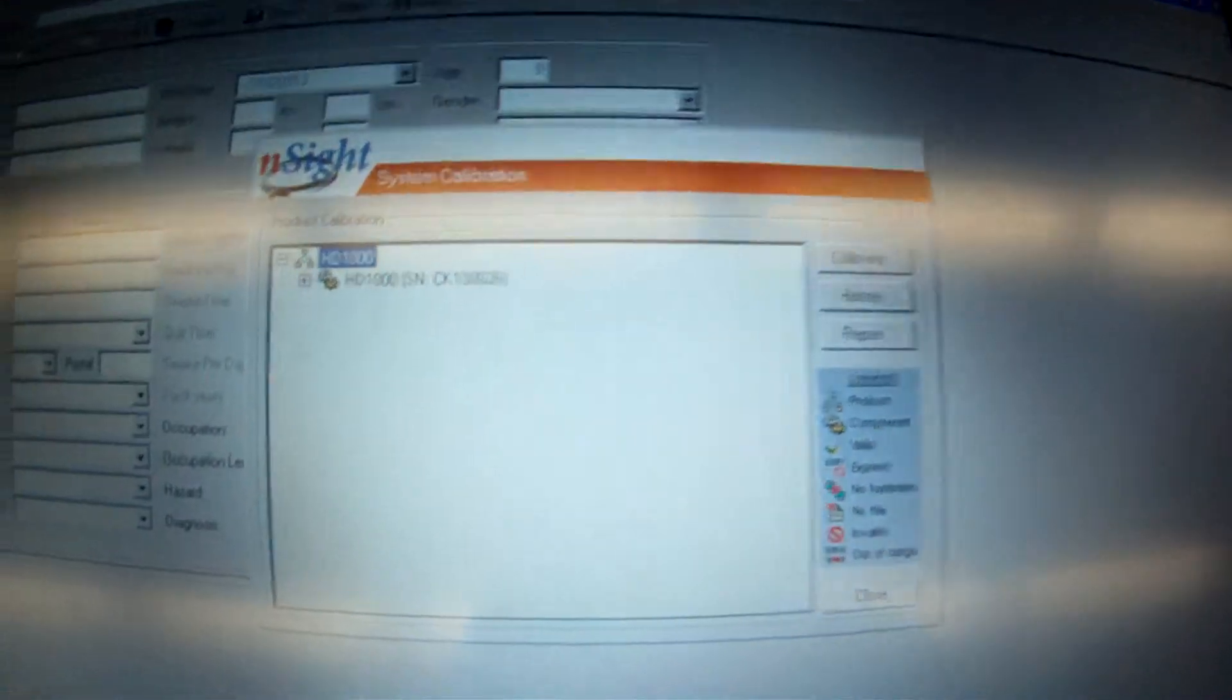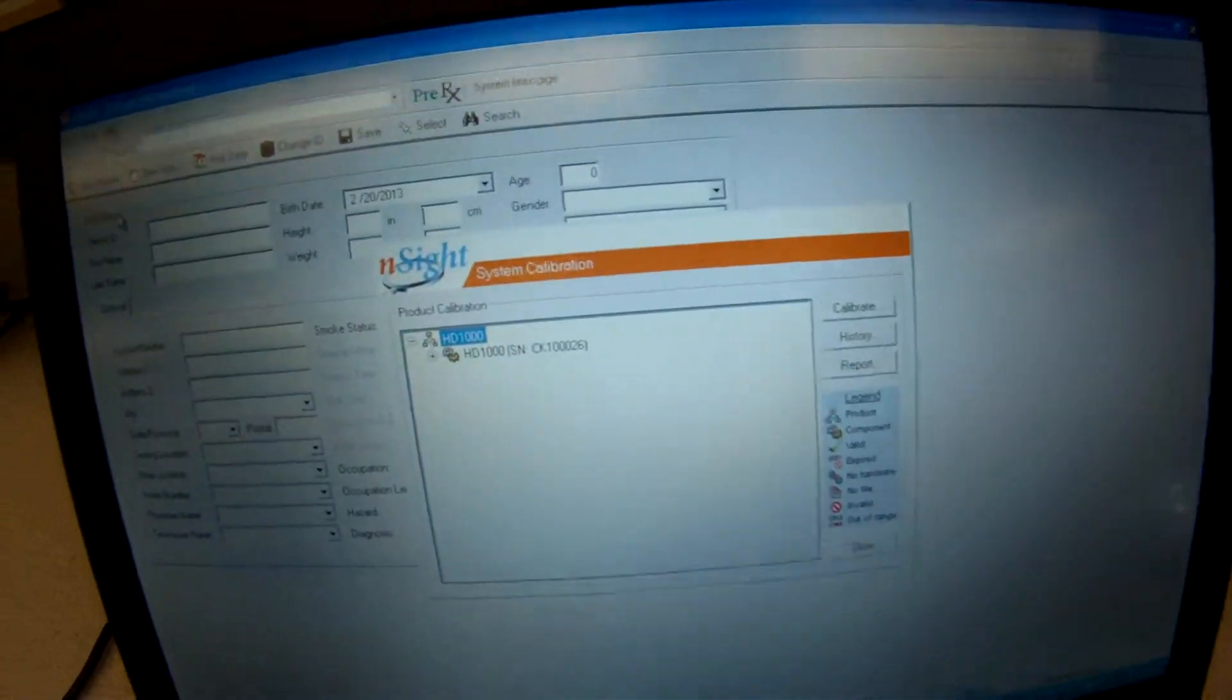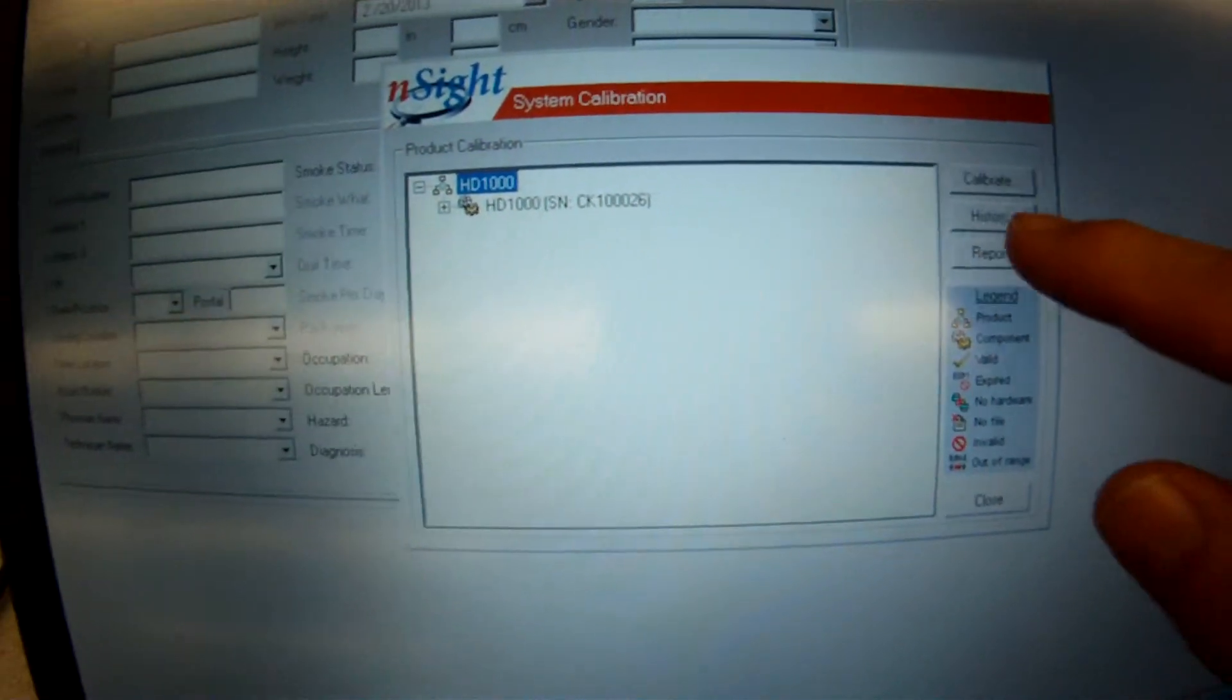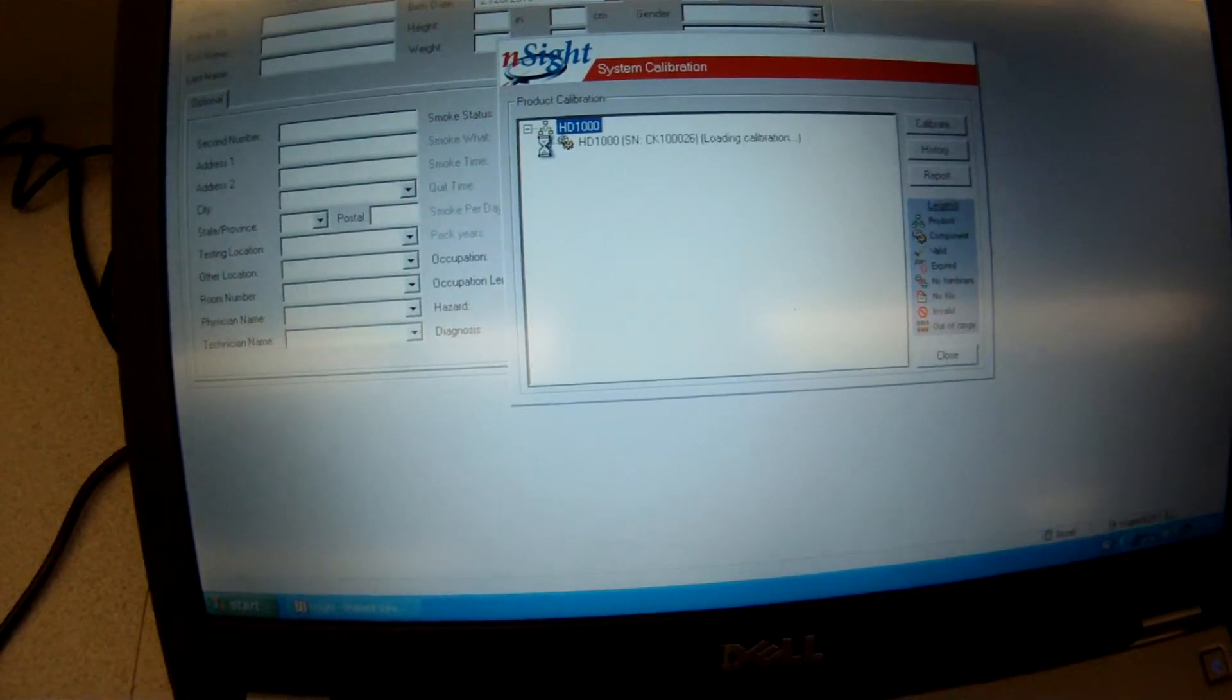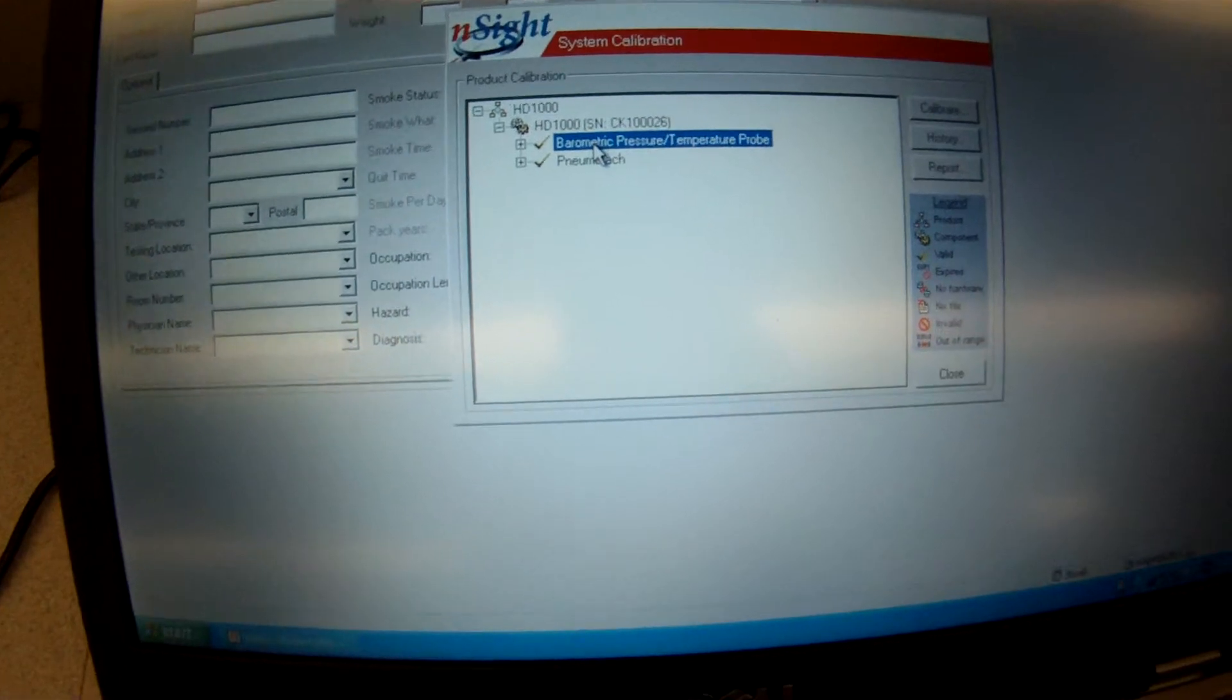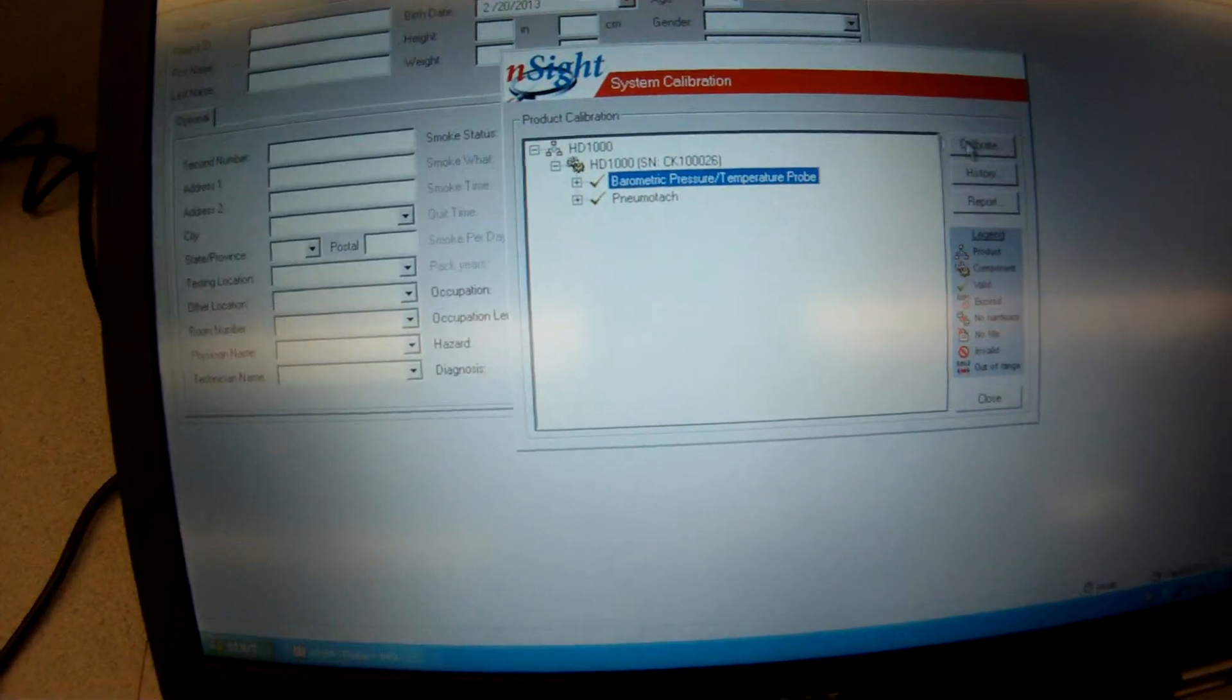Once we get the calibration going here, I know there's a little reflection on the screen there. There's nothing I can do about that right now. So we're going to calibrate, but we're going to first start off here by entering the barometric pressure and temperature. So click on that, hit calibrate.